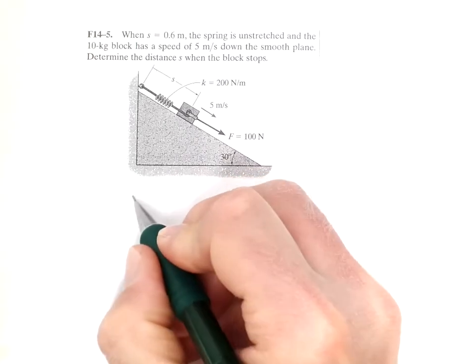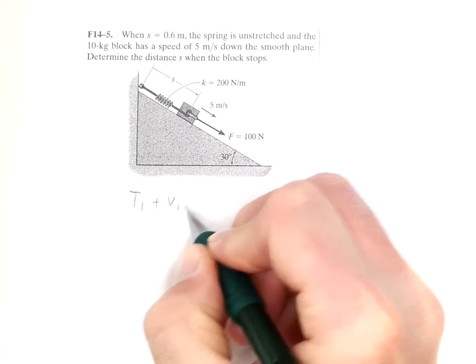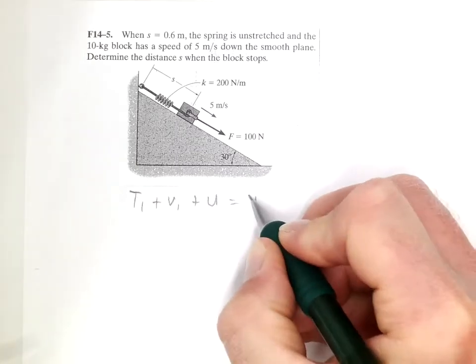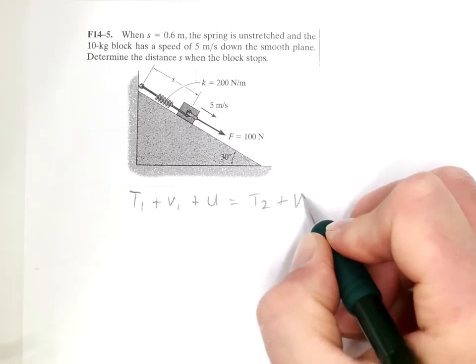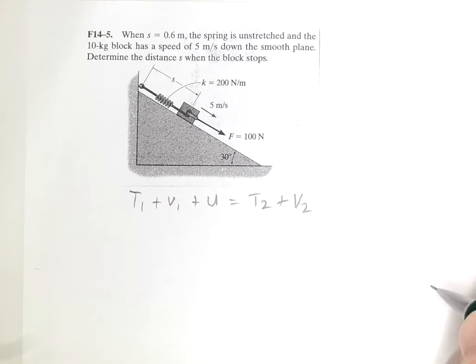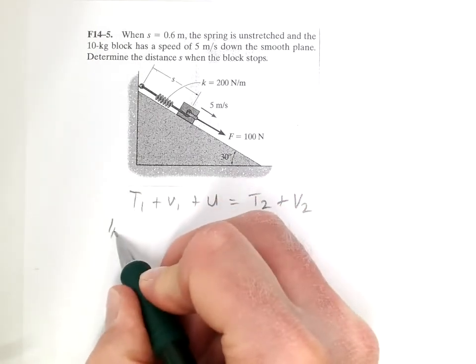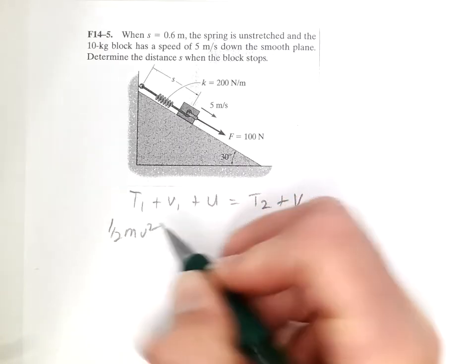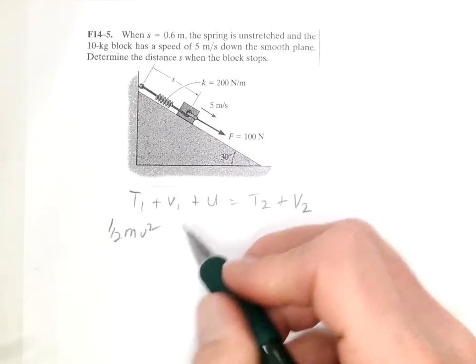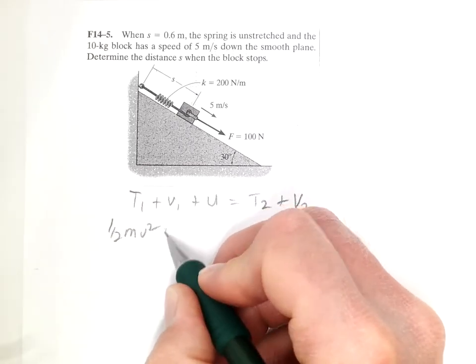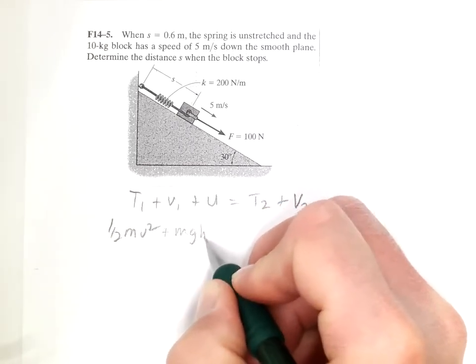So starting out, we'll start with T1 plus V1 plus U equals T2 plus V2. T1 is 1 half mv squared. We do have an initial velocity, so that has a value. Now V1, we'll call that mgh1.